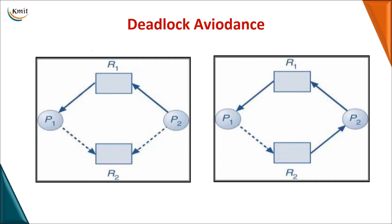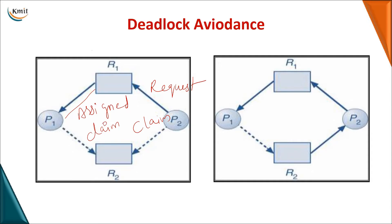Now we will see how we detect a deadlock using a resource allocation graph. Resources are represented with a rectangle and processes as circles. An assigned edge means a resource is assigned to a process, a request edge means a process is requesting a resource, and a claim edge indicates a future request. For example, P2 wants resource R2 and P1 also has a future claim — this is a future indication that it may ask for the resource.